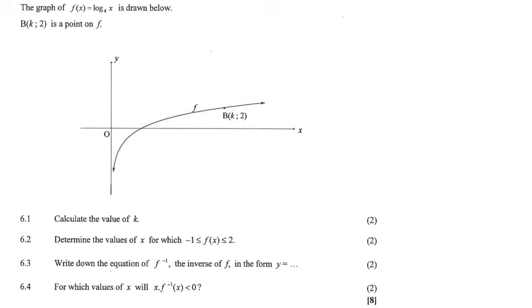Here we have a log graph that has been drawn, and they give us a point, and they say calculate the value of k. Okay, so that's easy. It's a point on the graph, and k is just the x, and we know that the y is 2.